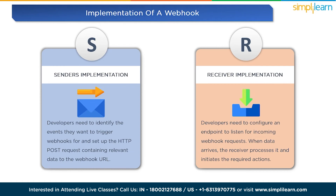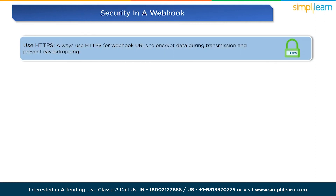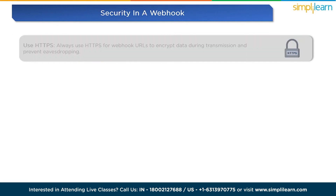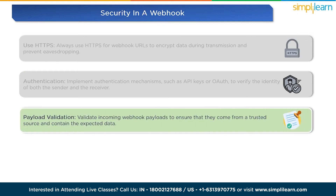Security is of utmost importance while dealing with webhooks. To ensure safe communication between applications, developers can take the following measures. First, use HTTPS — always use HTTPS for webhook URLs to encrypt data during transmission and prevent eavesdropping. Second, implement authentication mechanisms such as API keys or OAuth to verify the identity of both the sender and the receiver. Third, validate incoming webhook payloads to ensure they come from a trusted source and contain the expected data.